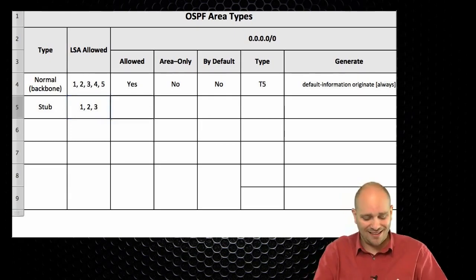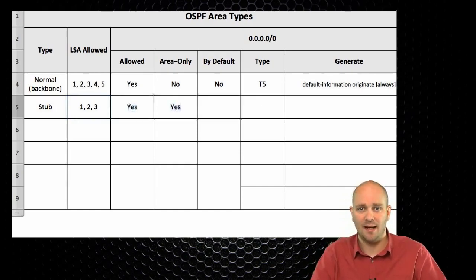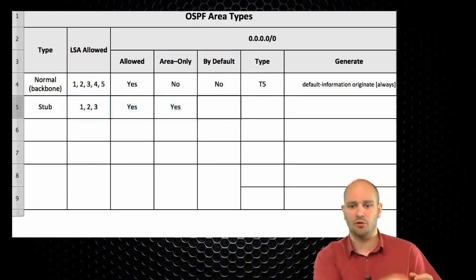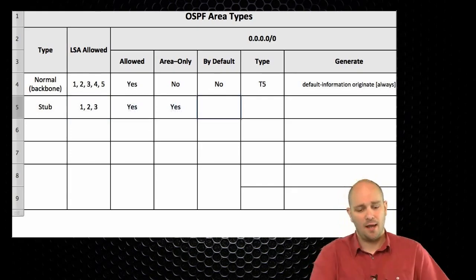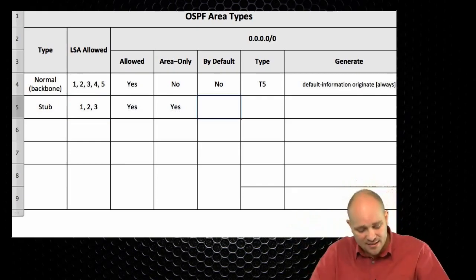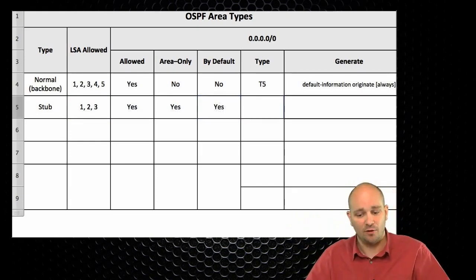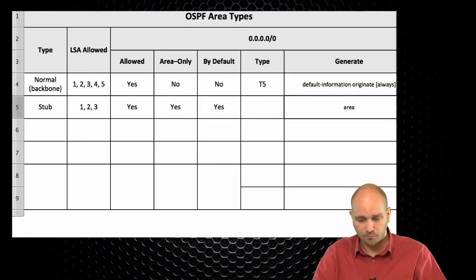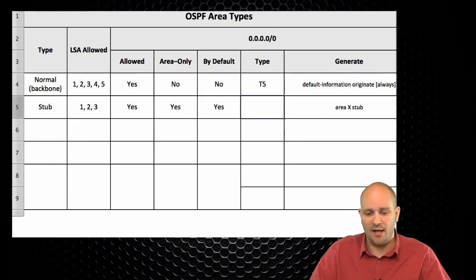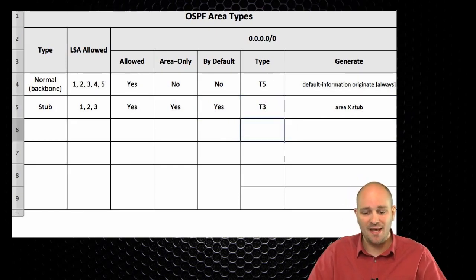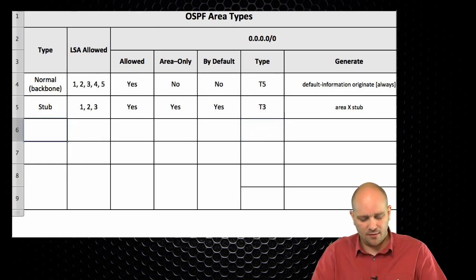The default route can exist in a stub area and can be generated only into the stub area. It is actually generated by default. The command is 'area X stub' — by virtue of creating the stub area, the default route is generated, and it is inserted as a type 3 LSA.